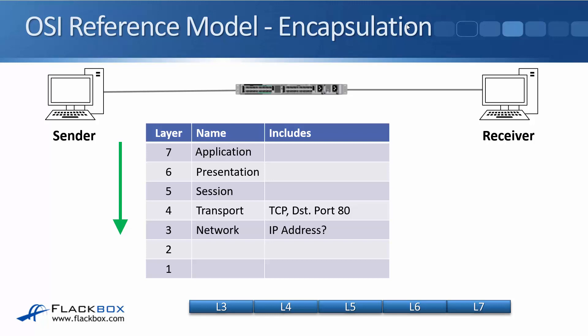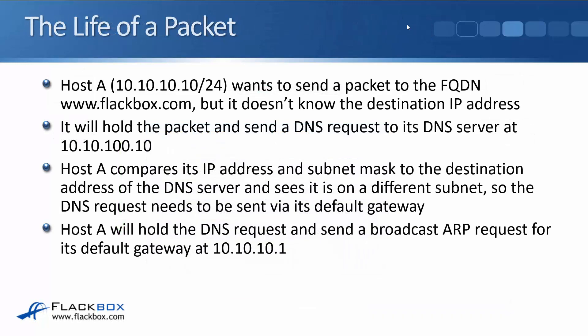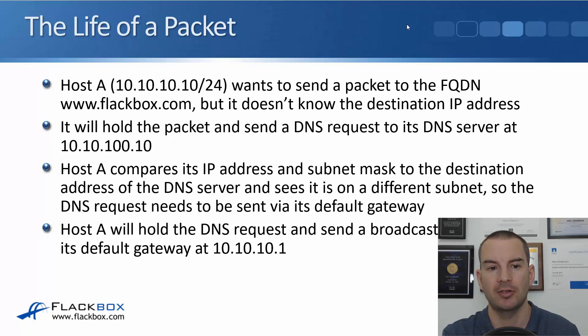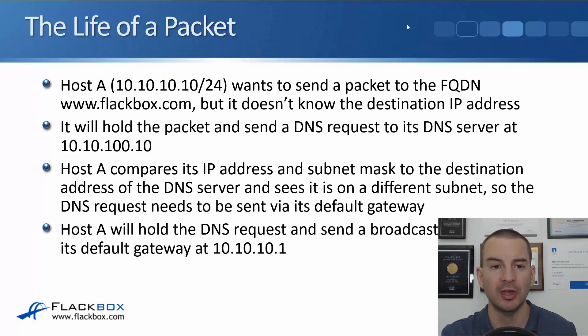When the sender is composing this web traffic it needs to make the layer 3 header, where it needs to enter the destination IP address. It doesn't know the destination IP address because the user just opened up a browser and entered www.flackbox.com. So the sender will need to resolve that to an IP address to complete the packet using DNS. Host A at 10.10.10.10/24 wants to send a packet to www.flackbox.com but doesn't know the destination IP, so it will hold that packet and send a DNS request to its DNS server at 10.10.100.10. The host already knows its IP address, subnet mask, default gateway, and DNS server.